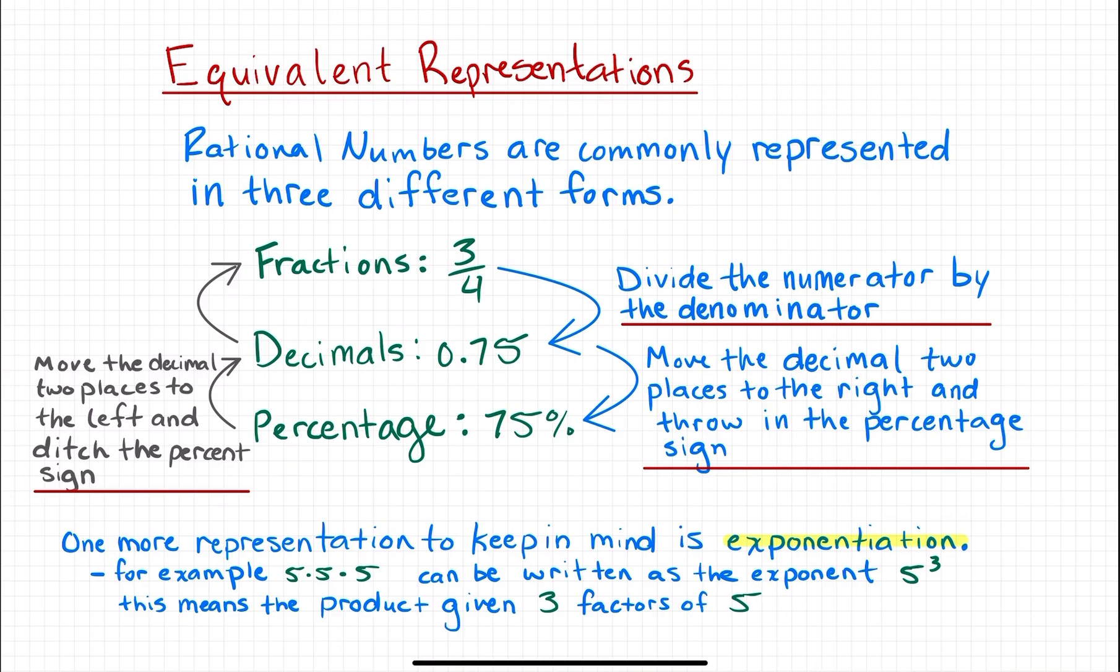You can go the other direction. If I have a percentage and want to convert it to a decimal, move the decimal two places to the left and remove the percentage sign. Then you're left with 0.75.